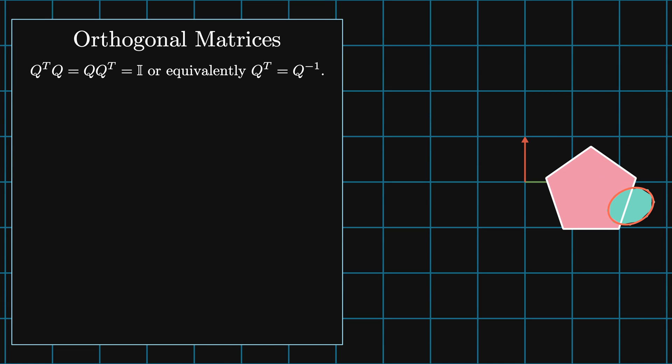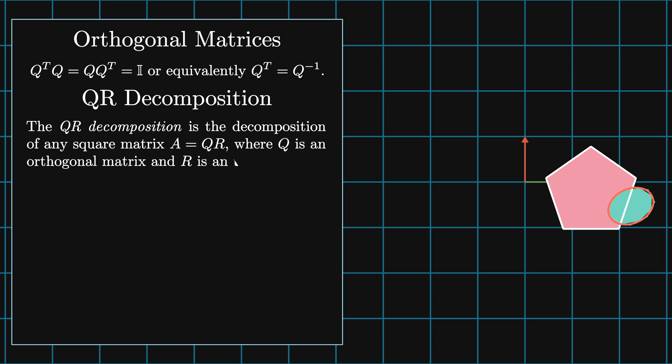We've been thinking about systems of linear equations and solving them using matrices. In the first video in this series, we used Gauss-Jordan elimination to solve systems of equations. However, there are several matrix decompositions that give us more information about a system. One of those is the QR decomposition. The QR decomposition is the decomposition of any square matrix A into the product of an orthogonal matrix Q and an upper triangular matrix R.